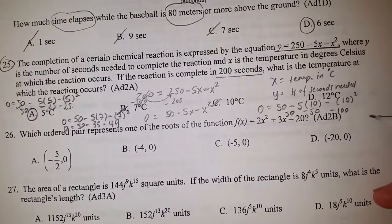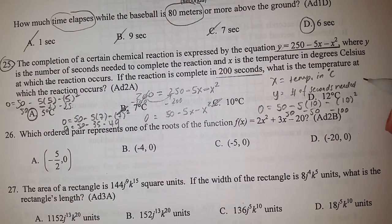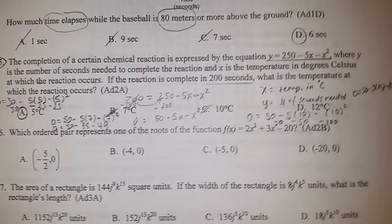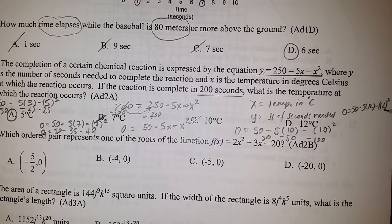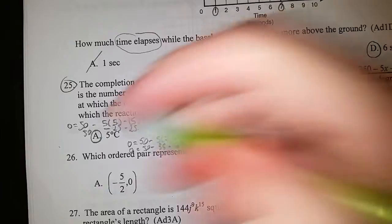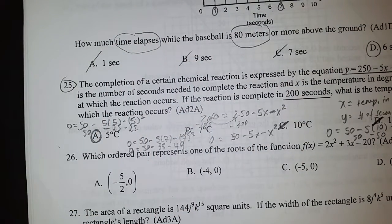For D, we're going to get 0 = 50 - 5(12) - 12². 12² is 144, 5 times 12 is 60. -60 - 144 is already more than 50, so that's not an option either. It's really indeed A.